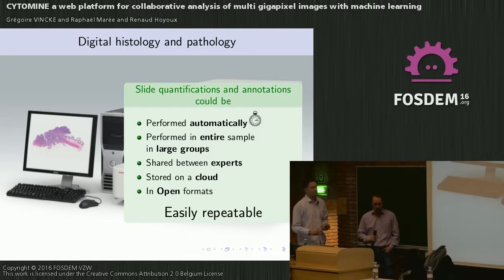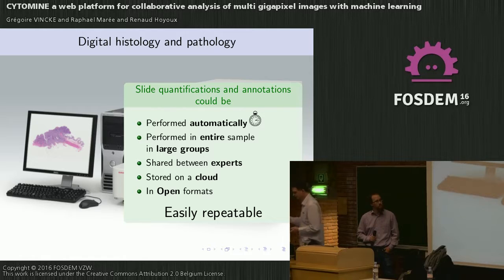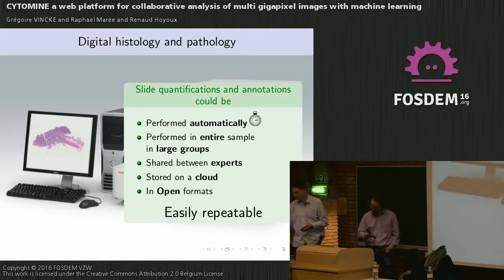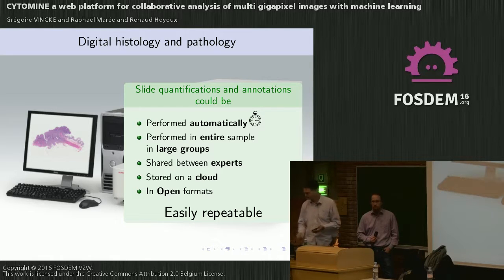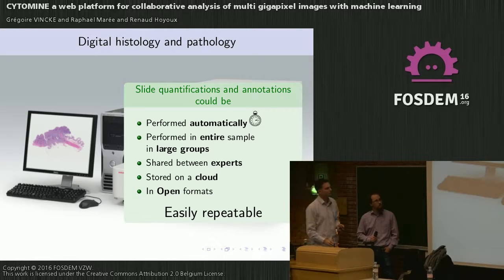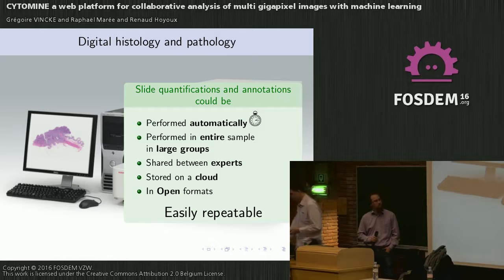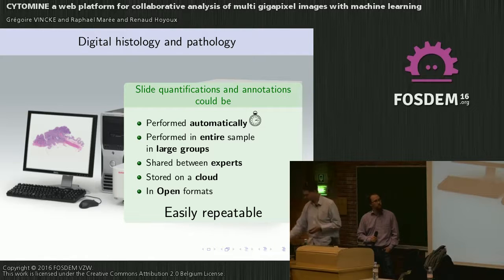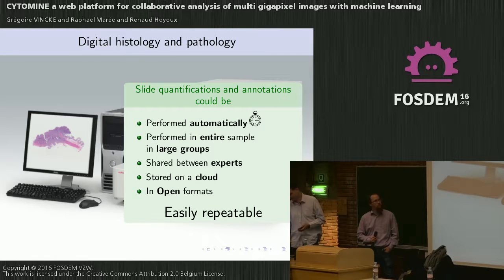With this kind of image, we are now able to perform studies automatically. Quantifications and annotations can be made by computers across the entire sample because computers are quicker than us, and in large groups. Results can be easily shared between experts on the cloud and, if possible, in open formats to allow research, education, and diagnostics to be easily repeatable. So it's a first step for open research, open education, and open data.